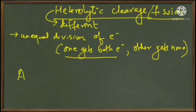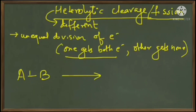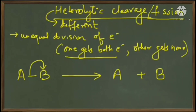For example, if we have a bond between A and B and we break them heterolytically, one of them — either A or B — will take both the electrons and the other will be left with none. If B takes both the electrons, then B has its own electron plus an extra electron, giving it a minus charge, and A has lost its own electron and therefore has a plus charge.